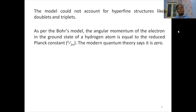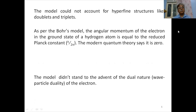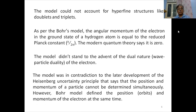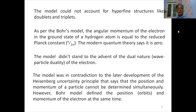As per the Bohr model, the angular momentum of the electron in the ground state is ħ (h/2π), however modern quantum theory says it should be zero. This model did not stand up to the wave-particle duality of the electron. Furthermore, the Bohr model is in contradiction to the Heisenberg uncertainty principle, which states that position and momentum of a particle cannot be determined simultaneously. Yet Bohr's model defined both the orbits and the momentum of the electron at the same time.